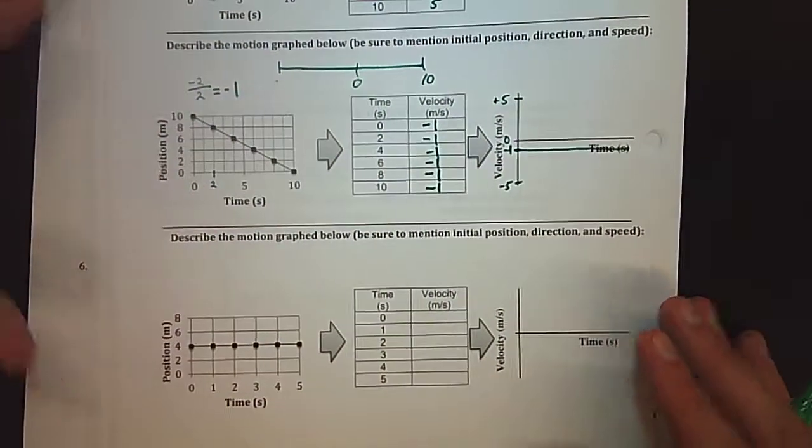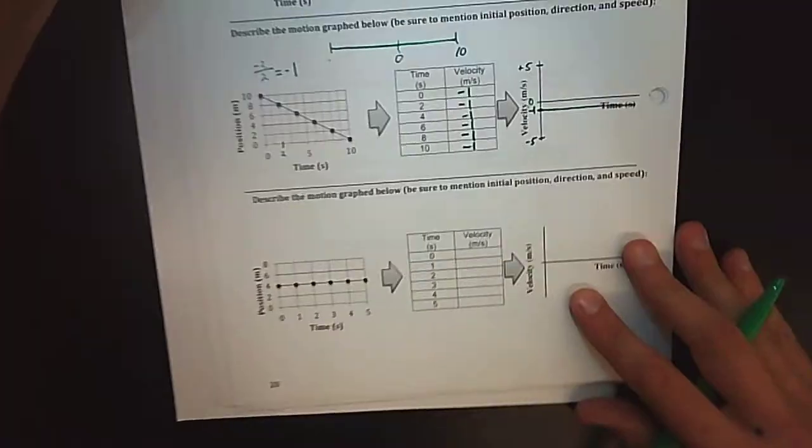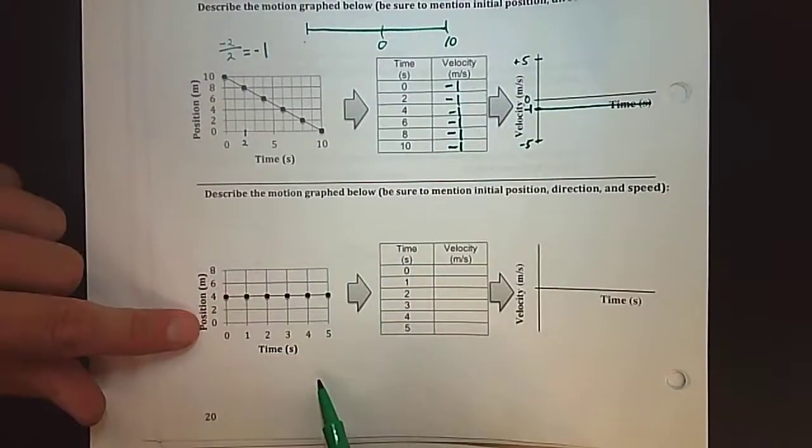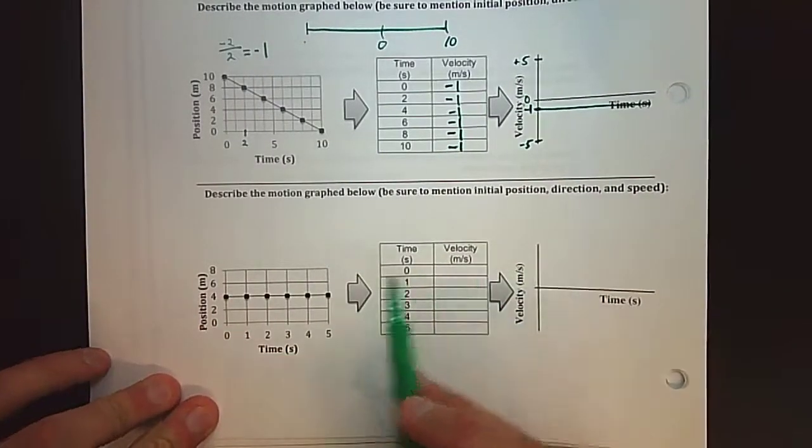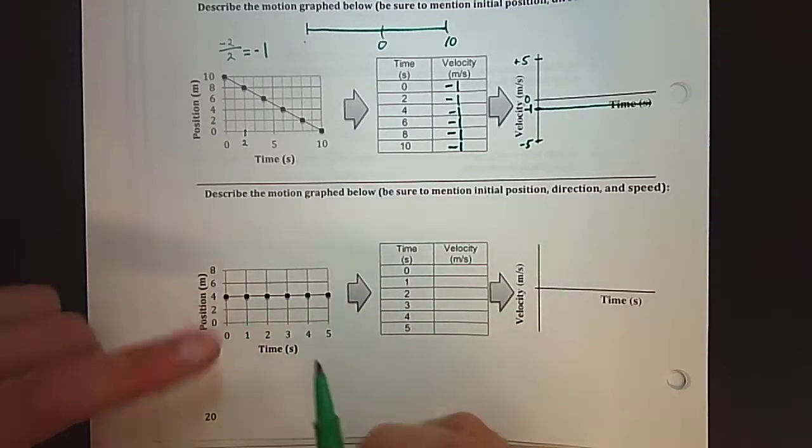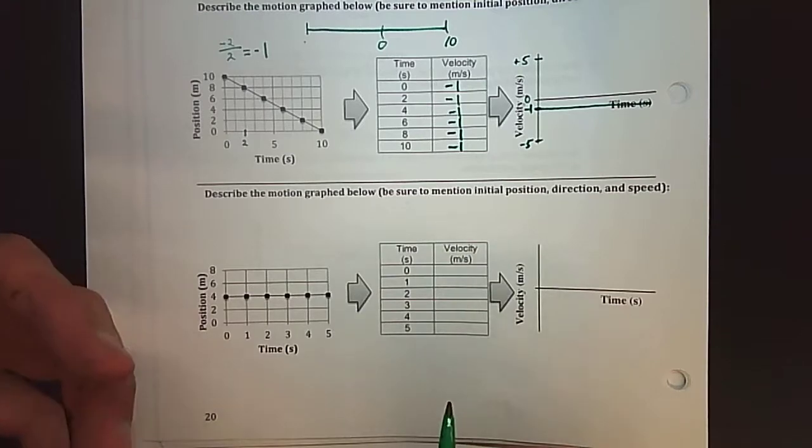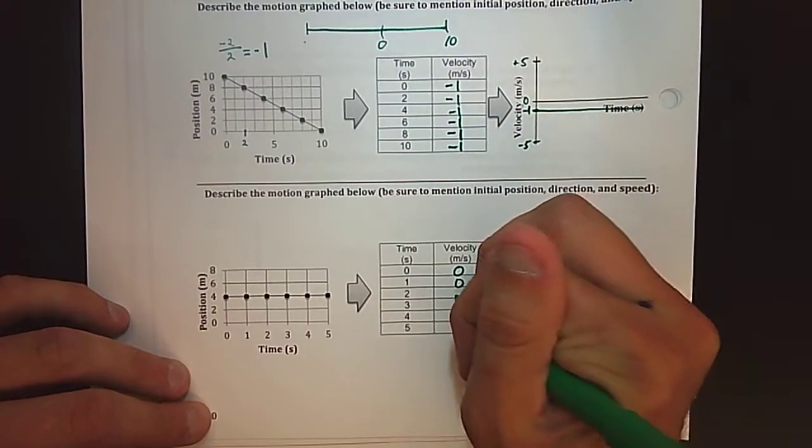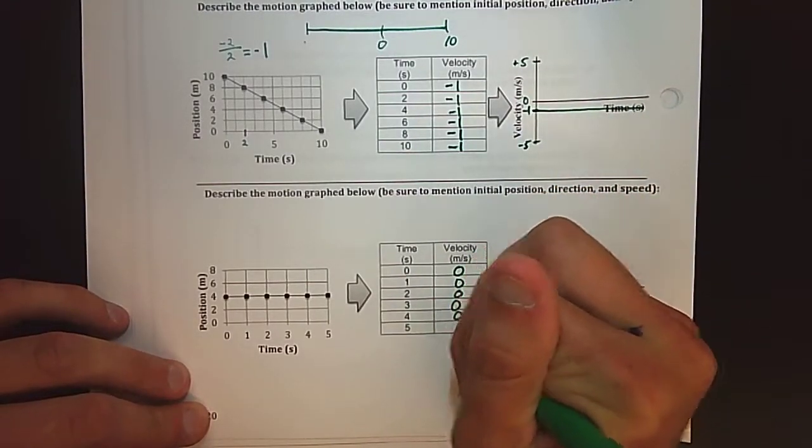For this last graph we have a position versus time graph. I'm going to look for my slope again and anytime going back to algebra you have a horizontal slope, your slope is going to be zero. So my velocity is zero meters per second. It's almost like I'm saying I'm going at zero miles per hour, zero kilometers per hour, I'm not moving.